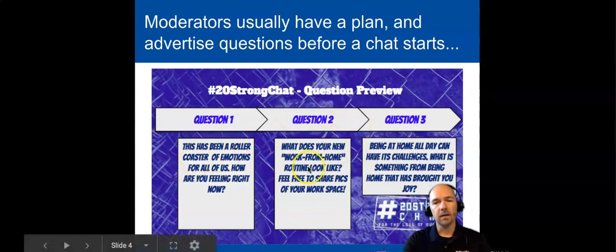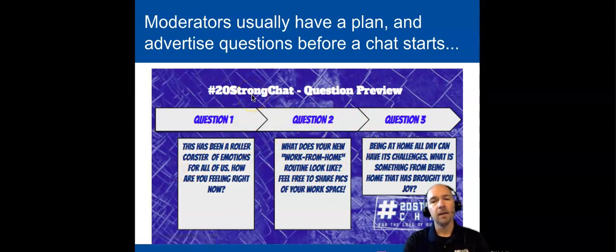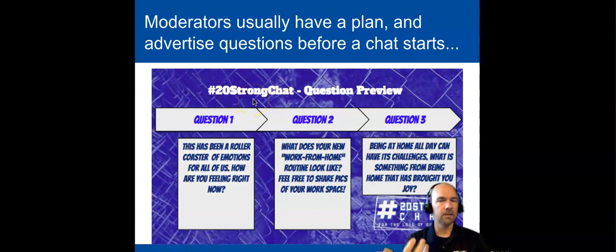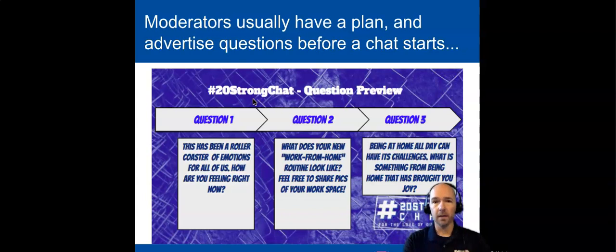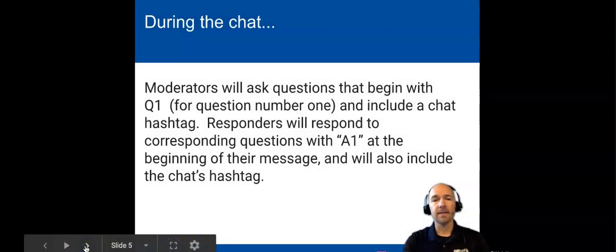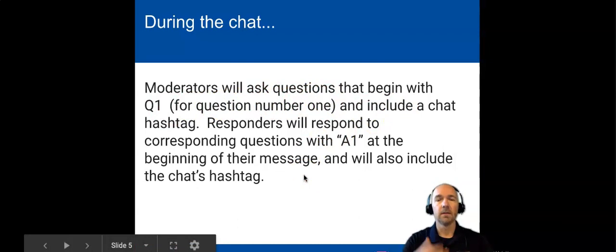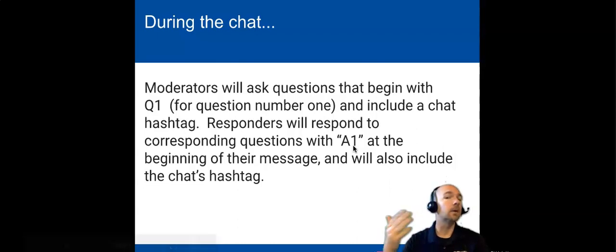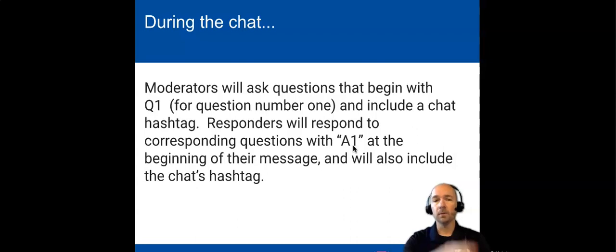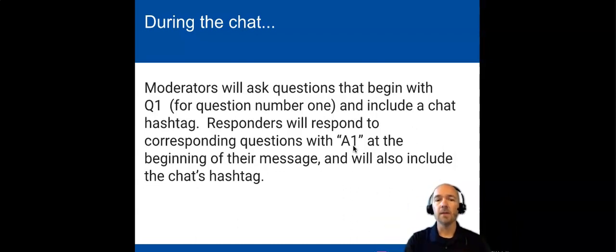The questions are posted ahead of time, and at the end of any message in a chat, you will always end with the hashtag. This allows you to find it and makes it searchable, putting all similarly hashtagged items together. As for the chat itself, a moderator starts their message with Q1 when asking question one, then asks their question and includes the hashtag at the end. If you're answering, you use A1 for question one, A2 for question two, and so on, then write your answer and put the educational hashtag at the end as well.